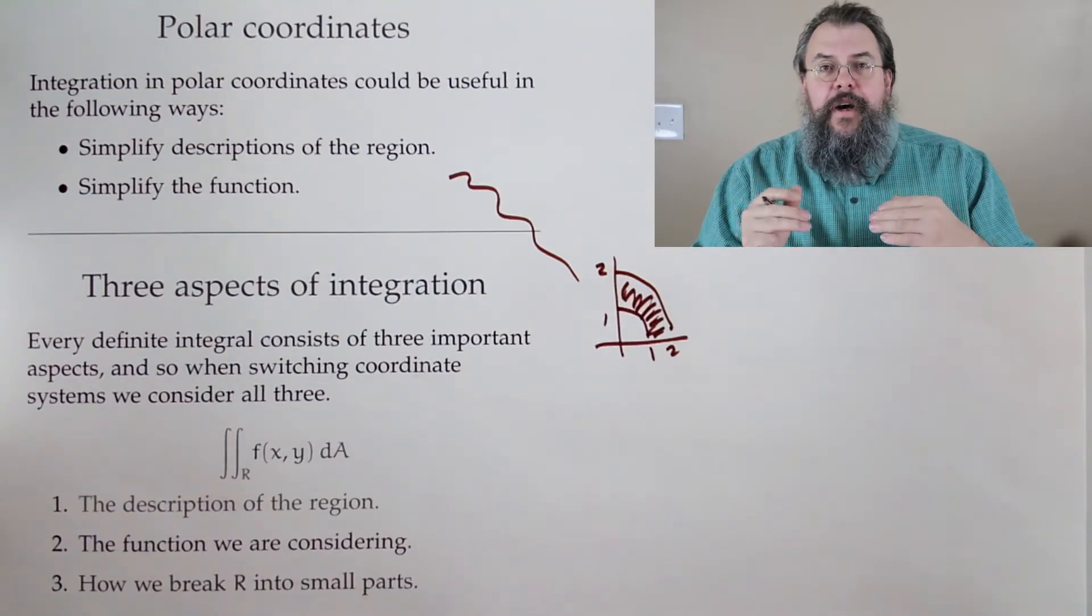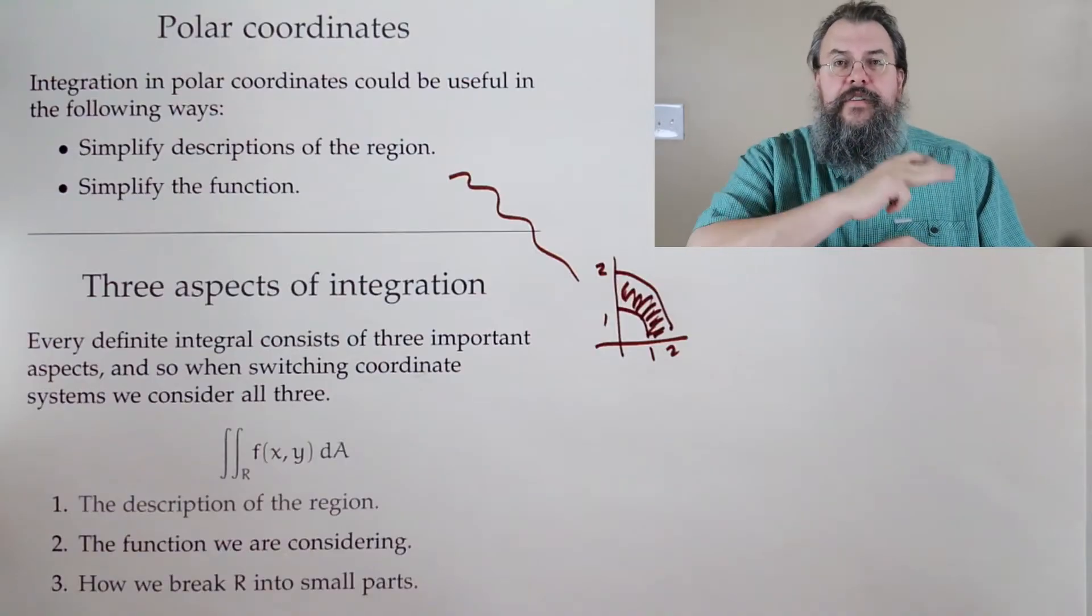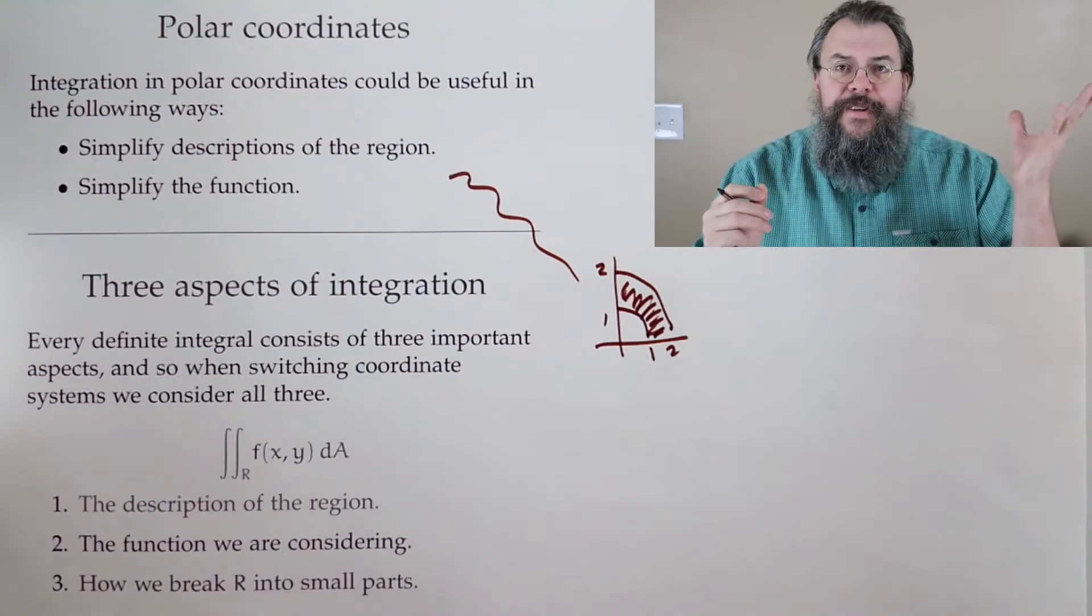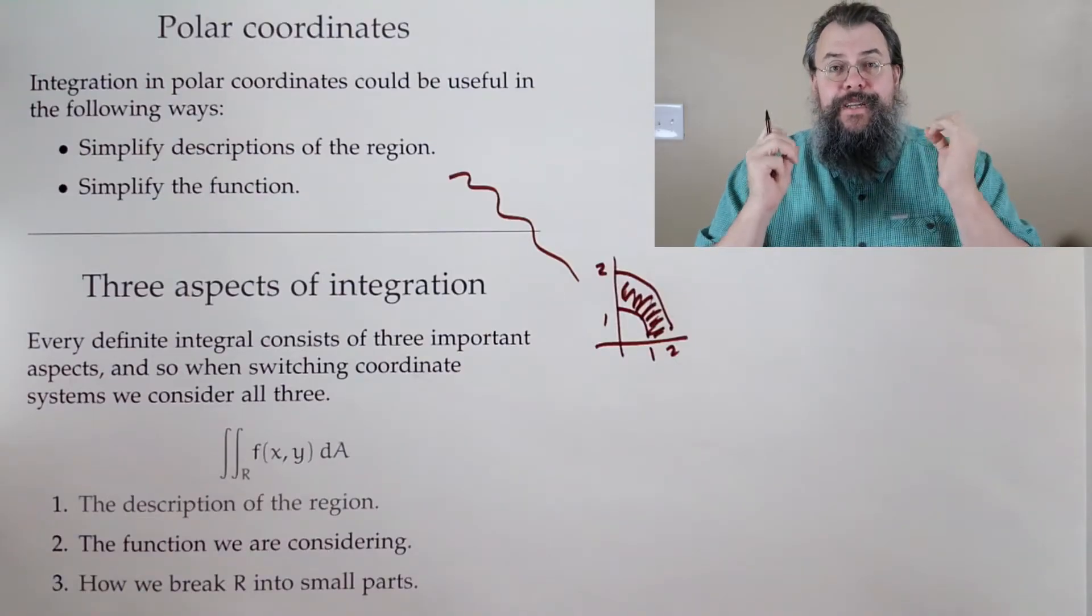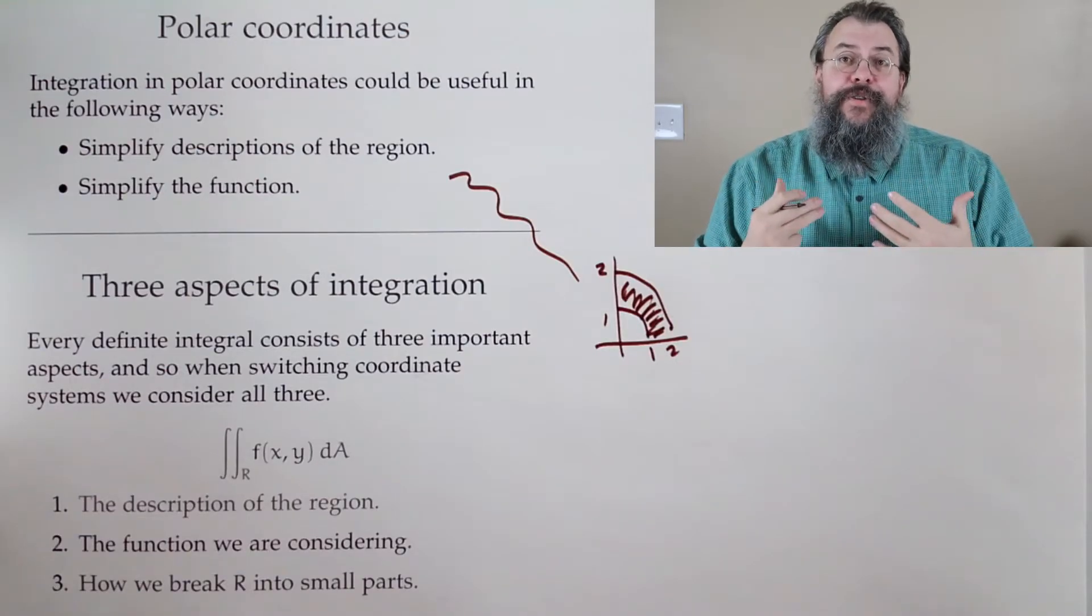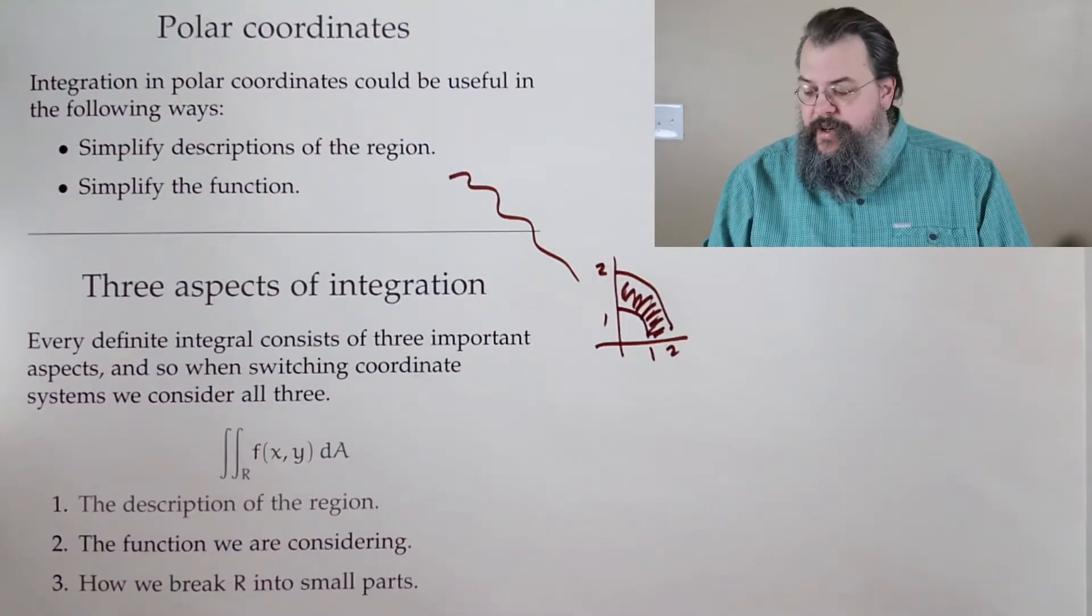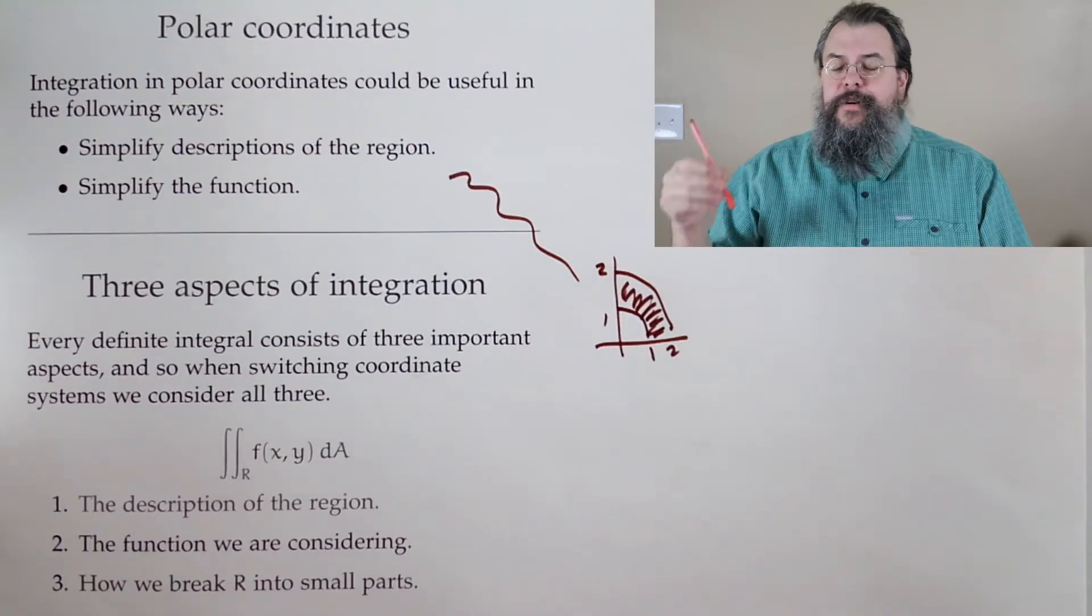I say, all right, my angle for theta, zero to pi over two, my r from one to two, and beautiful, beautiful, clean description of polar. Now, if we had to go through and describe this in terms of Cartesian, especially for integration, oh, oh, what a headache. We'd have to split it into parts,